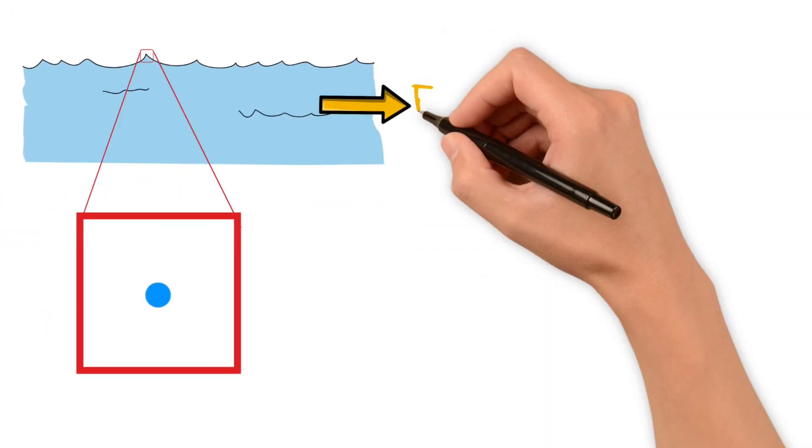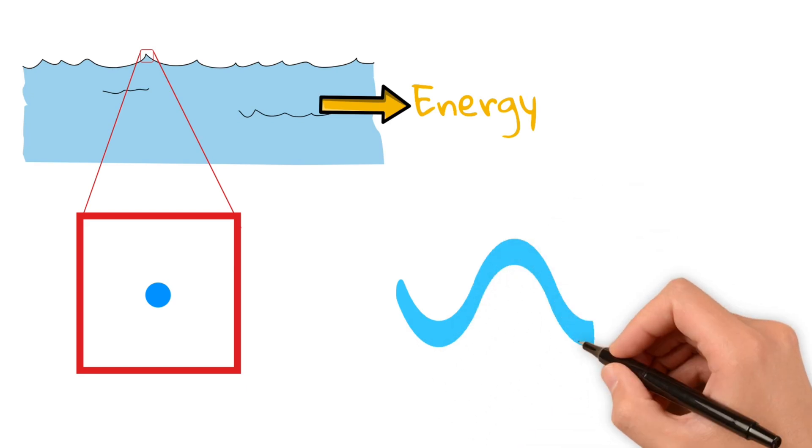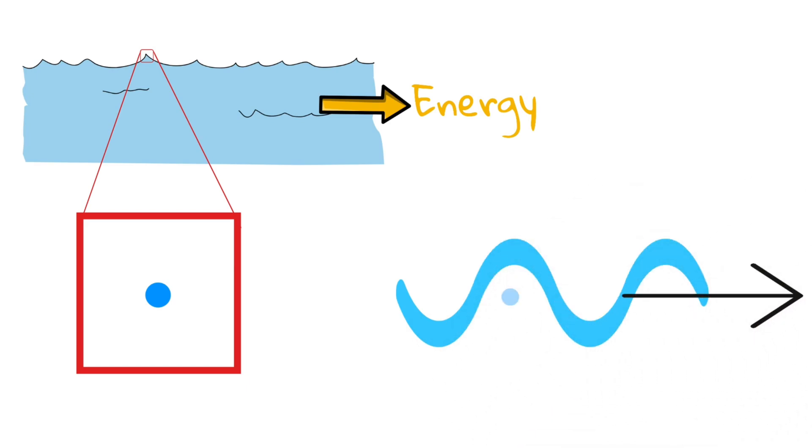Now let's follow a single water molecule as the wave passes. Even though the wave energy moves towards the shore, the water molecule doesn't travel with it. Instead it moves up and down, oscillating in place. So while the wave moves forward, the water itself just jiggles.